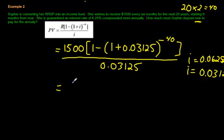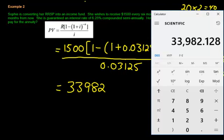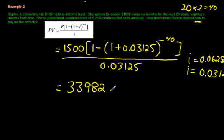$33,982.13. This is money. So you would have to say that Sophie, it'd be really nice to say it in a sentence. Sophie would need to deposit $33,982.13 in order to receive $1,500 twice a year for the next 20 years.